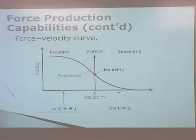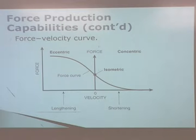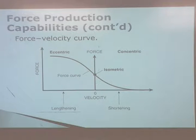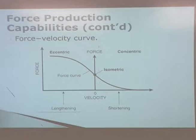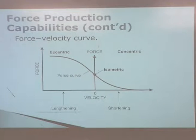At any velocity, the key point is that any concentric force is less than isometric. It doesn't matter how quickly I am shortening the muscle, the force I can produce is always going to be less than what I can produce for an isometric contraction. When we look at eccentric force, the picture gets really interesting — the faster it goes, the more quickly it's lengthening, the more force it's able to produce. At any velocity, any lengthening will produce more force than you can produce isometrically.